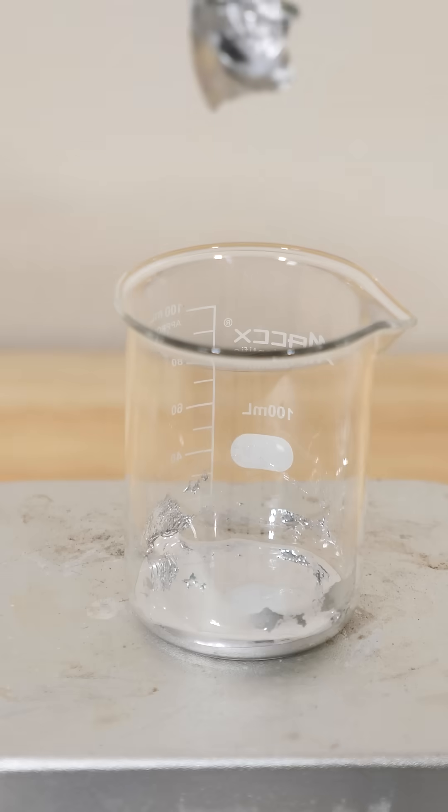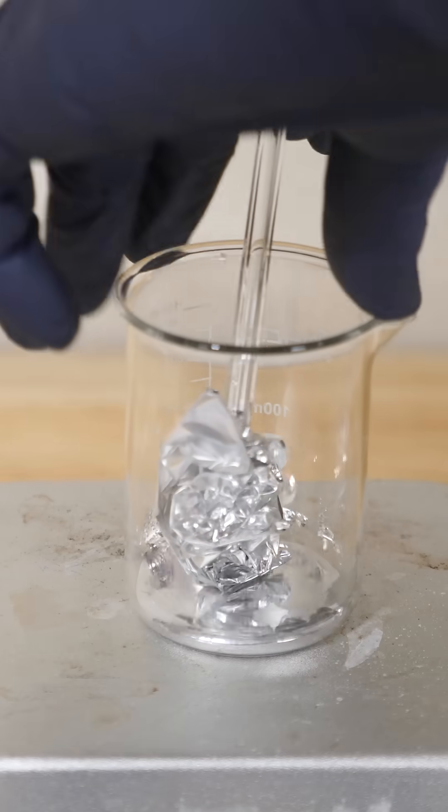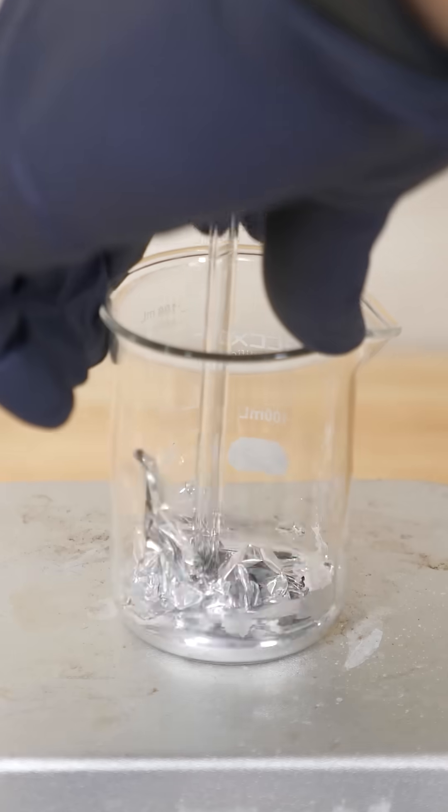But if I just add the aluminum to this gallium, the gallium dissolves the aluminum and doesn't let the oxide layer form.